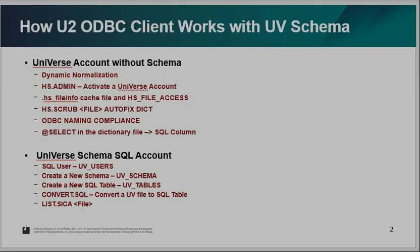On Universe, we have two types of accounts. One account type is no-schema. For example, hs.sales or hs.services is already activated for ODBC access but there is no schema — we call this dynamic normalization. If you are working on other accounts, you need to run the hs.mn tool to activate your Universe account.